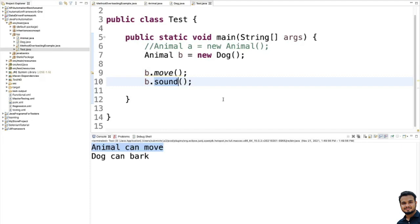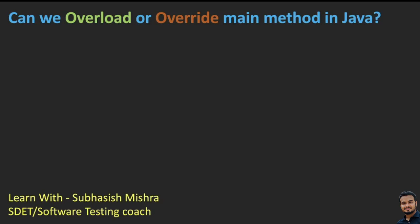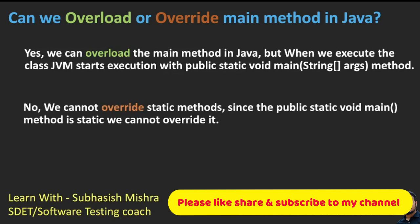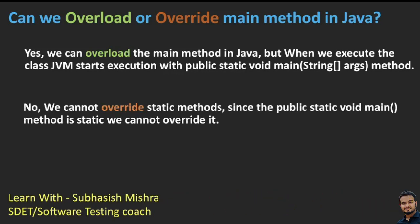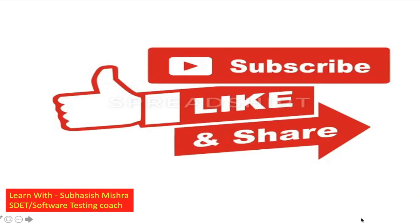Now we understand we cannot override a static method, and public static void main is a static method — that is why we cannot override the main method. To conclude: yes, we can overload the main method in Java, but when we execute the class, JVM starts execution with public static void main(String args) — that is very important to remember. And no, we cannot override static methods since the public static void main method is static. I hope this video was helpful. Please like, share, and subscribe. If you have any questions, let me know in the comments.